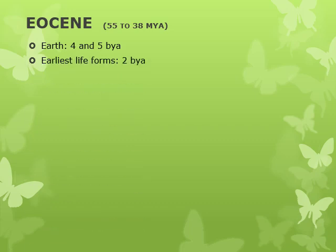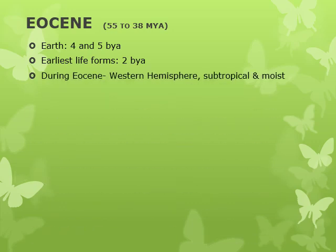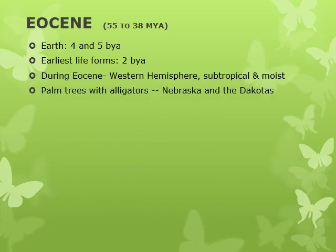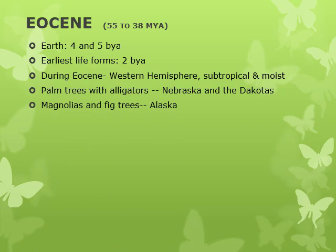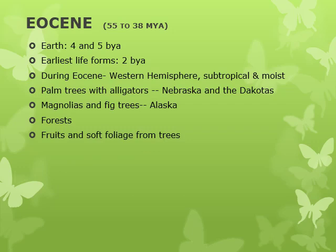Starting from the Eocene, it is estimated that the Earth settled down to its present size between 4 and 5 billion years ago. Earliest life forms developed about 2 billion years ago. During the Eocene, the climate in most of the western hemisphere lowlands was subtropical and moist — palm trees with alligators living as far north as Nebraska and the Dakotas. Magnolias and fig trees flourished in Alaska. Forests covered much of the land, and animals that flourished during this period had to be able to eat fruits and soft foliage from trees.